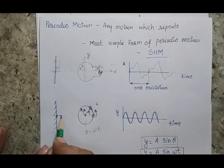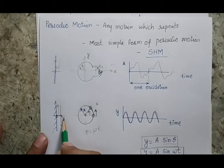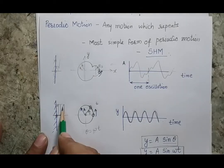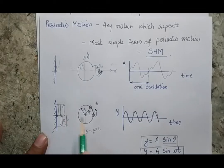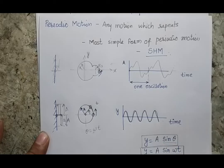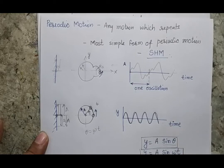Such motion, where the equation of motion can be written using a simple sine function, is called simple harmonic motion. Physically, the ball goes to one side of the mean position, comes back, goes to the other side, and returns — with the maximum deflection on both sides being constant and equal to the radius A of the circular path. Motions representable by a simple sine or cosine function are known as simple harmonic motion.